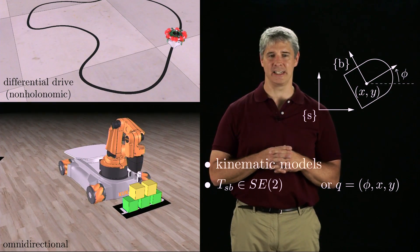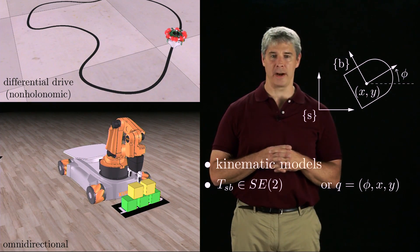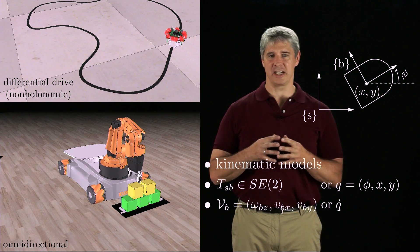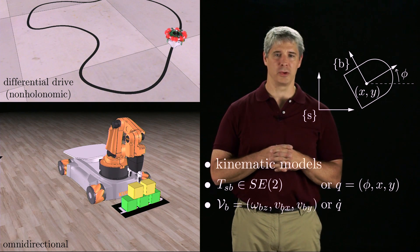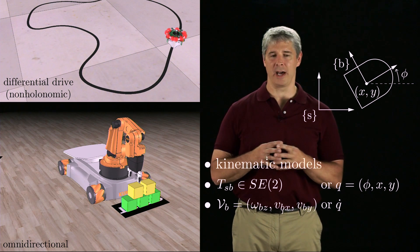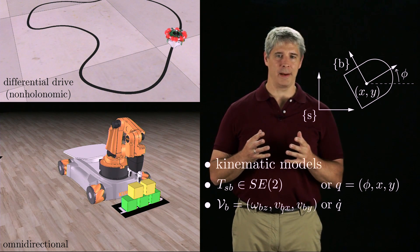Phi is the heading angle of the chassis, and x, y is the position of a reference point on the chassis. The velocity of the chassis is written either as the planar twist VB, expressed in the body frame B, or as the time derivative q dot.